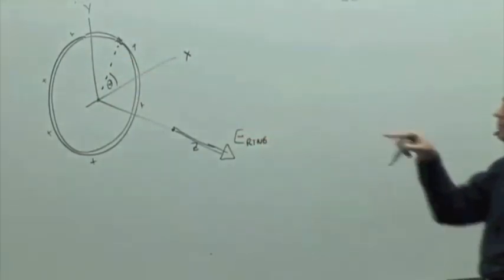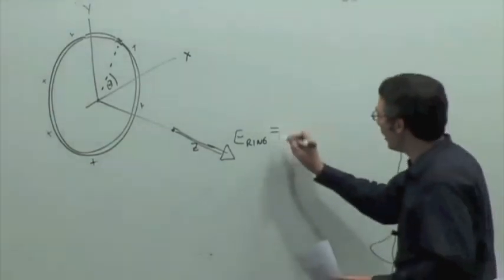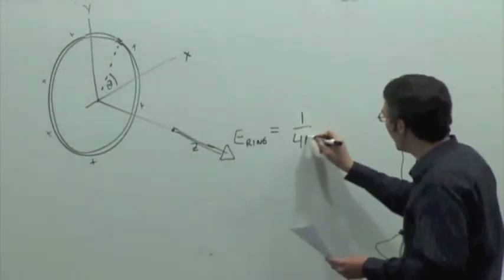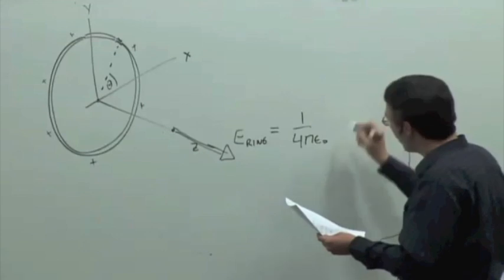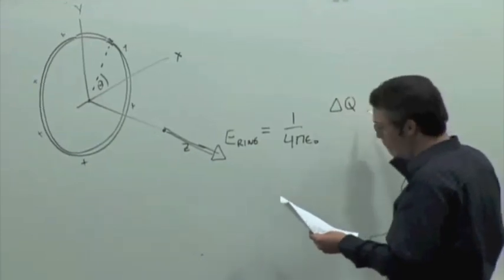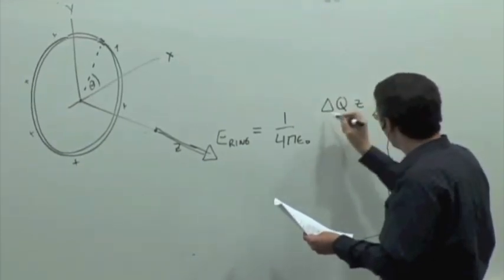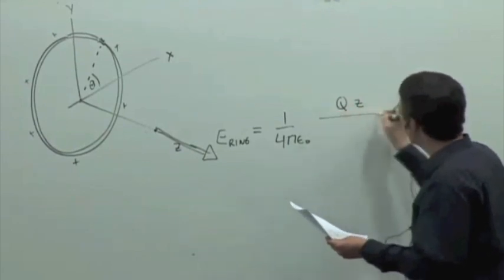We were able to come up with the magnitude of the electric field of the ring, which is 1 over 4 pi epsilon 0, not delta Q, just Q, charge of the ring.